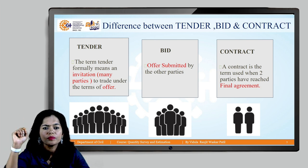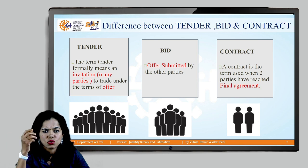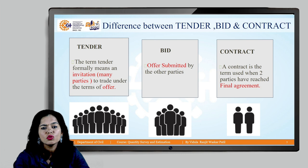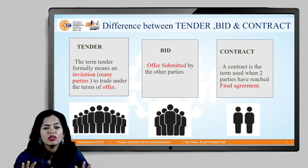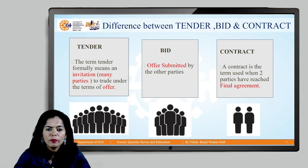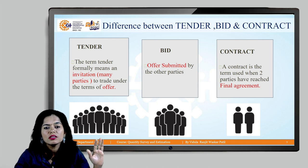First is tender, bid, and contract. The term tender formally means invitation. It is a proposal or offer given to the contractors — given to many contractors; we have not yet finalized anyone. It is given to all contractors in various modes: hard copy or, now, e-tendering in soft copy on the department portal.